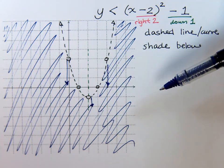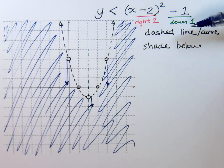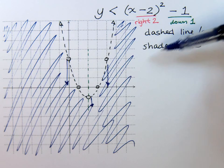So, you see, it's a lot like graphing a parabola, except we just had to pay attention and see it isn't an equality. It was going to be dashed, and we had to shade below.